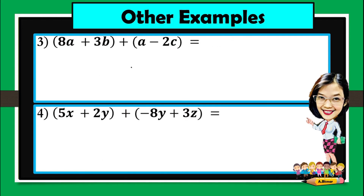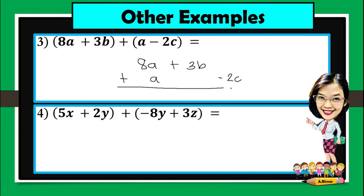Another example: what if we have 8a plus 3b added to a plus c? We will align a with a. Since b is different from c, then this should be aligned separately. Then, let us just combine terms that are similar. 8a plus a is 9a. Let's just bring down 3b, and then bring down 2c. So the answer is 9a plus 3b minus 2c.